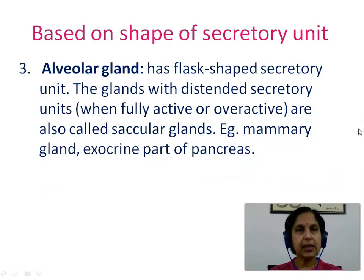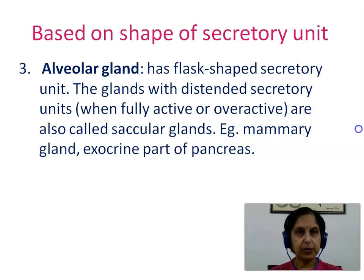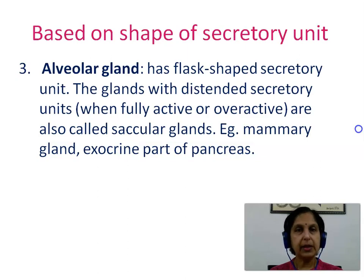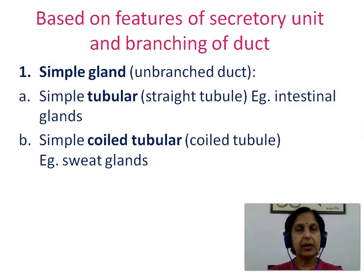The third type is the alveolar gland, which has a flask-shaped secretory unit. Glands with distended secretory units — when the secretory unit is fully active or overactive — are also called acinar glands. Examples are the mammary gland and exocrine part of the pancreas.